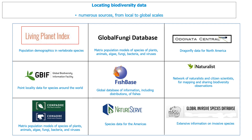With any of these databases, it's important to know the source of the data — whether, for example, the distribution data are modeled, as in the FishBase example, or whether the data come from museum specimens, including historical records that might not be relevant to the current condition of the region, as in the GBIF database, or whether the data come from genetically sequenced specimens, as in the Fungal Database. Erroneous data can also creep into any of these databases, but some have systems where possible errors are flagged or where validation by experts has been given.